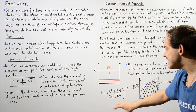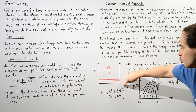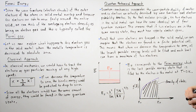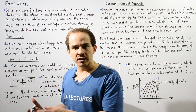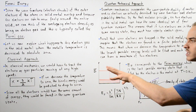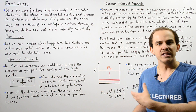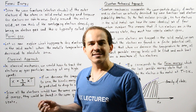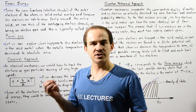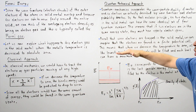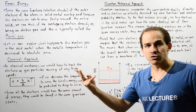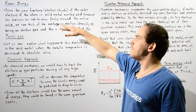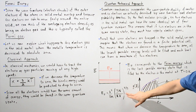The Fermi energy E_F is equal to h-squared divided by 8m, multiplied by (3n divided by pi times V) to the exponent two-thirds. So, once again: the classical approach tells us that at zero Kelvin all electrons will have an energy of zero and be found in the same quantum state. But the quantum mechanical approach shows this isn't true — electrons will not have an energy of zero. Instead, they all drop to the lowest possible energy levels, with a maximum of two electrons per level, and the final energy level is defined as the Fermi energy given by this equation.